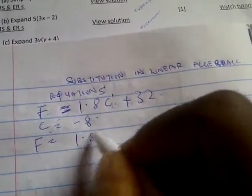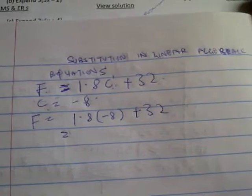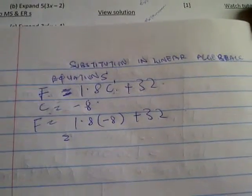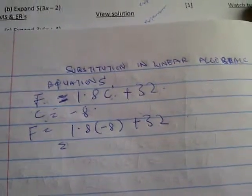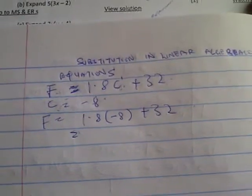So F is going to be 1.8 into minus 8 plus 32, and that will give you 1.8 times 8 plus 32, that will give you 17.6.